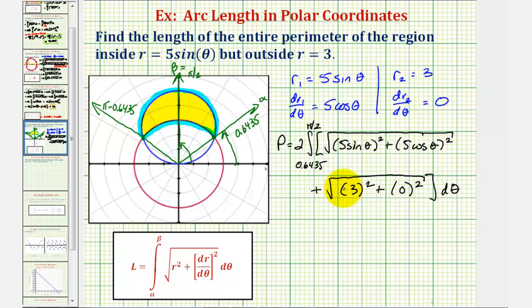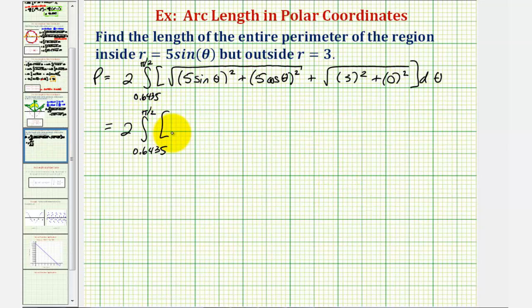Now that we have this set up, let's go and evaluate this on the next slide. Here we'd have the square root of this would be 25 sine squared theta plus here we'd have 25 cosine squared theta. And here we just have the square root of nine, which would be three.